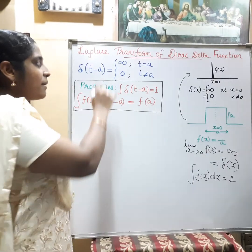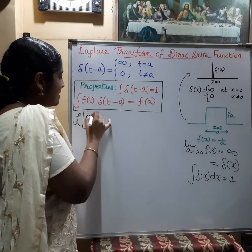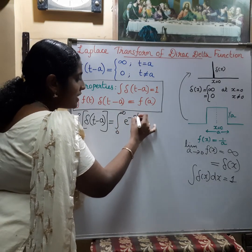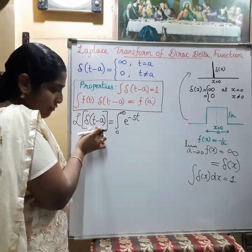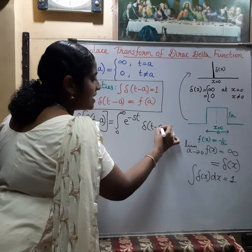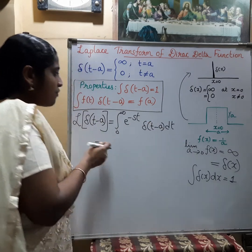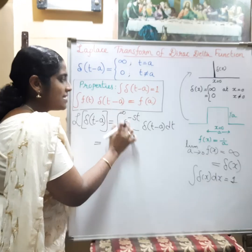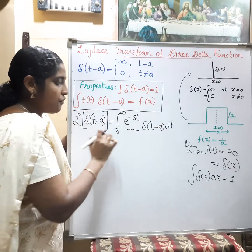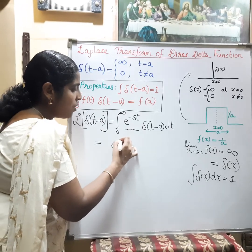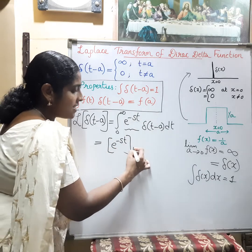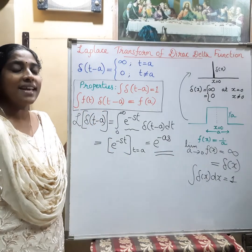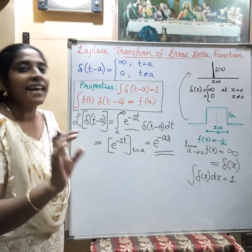Now we find the Laplace transform of δ(t−a). The basic formula is the integral from 0 to infinity of e^(−st)·f(t) dt. Here, our function f(t) is the Dirac delta function δ(t−a). Using the property that the integral of f(t)·δ(t−a) = f(a), here f(t) = e^(−st), so f(a) = e^(−as). Therefore, the Laplace transform of δ(t−a) is e^(−as).